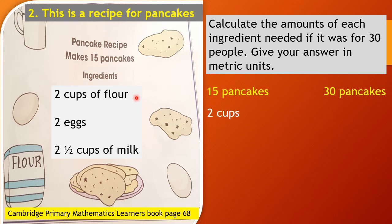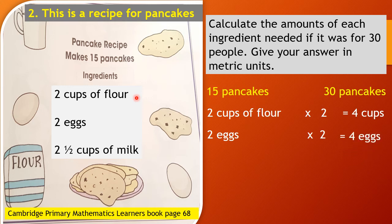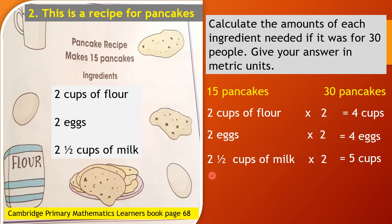So, 2 cups of flour — when you double it or multiply by 2, you will get 4 cups of flour. For 2 eggs, when you double 2 eggs, it becomes 4 eggs. And when you double 2 and a half cups of milk, it equals 5 cups. Because doubling 2 gives 4, and doubling a half gives 1, so 4 plus 1 is equal to 5 cups.